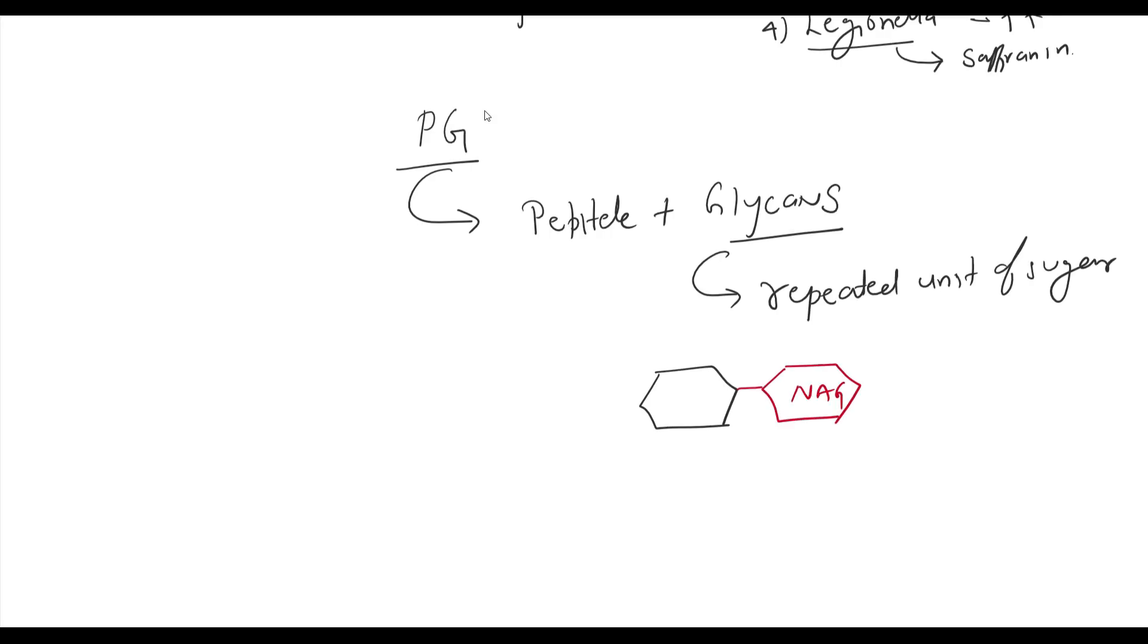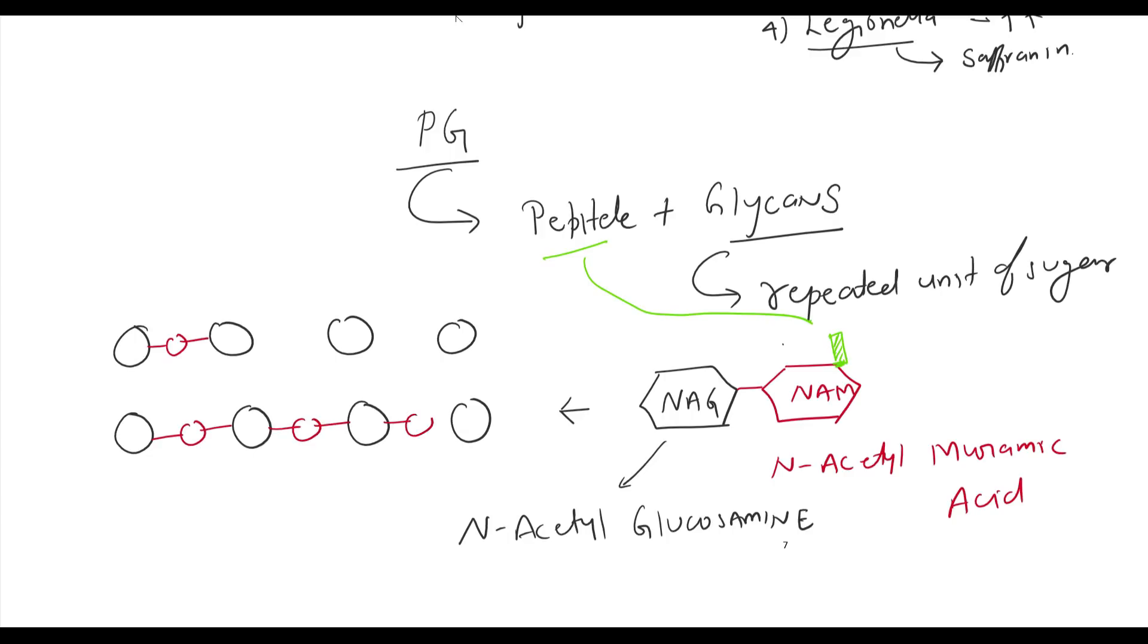Let's continue our discussion with formation of bacterial cell wall. Peptidoglycan is integral component of bacterial cell wall. Peptidoglycan is composed of peptide and glycans. Glycans is repeated unit of sugar which consists of N-acetyl glucosamine and N-acetyl muramic acid. This NAG and NAM constitute glycans unit. Peptide is attached to N-acetyl muramic acid. And this peptide bond cross-link with other N-acetyl muramic acid resulting in formation of peptidoglycan molecule.